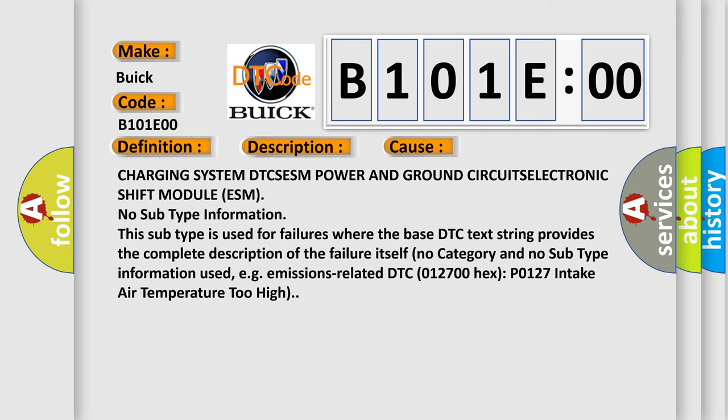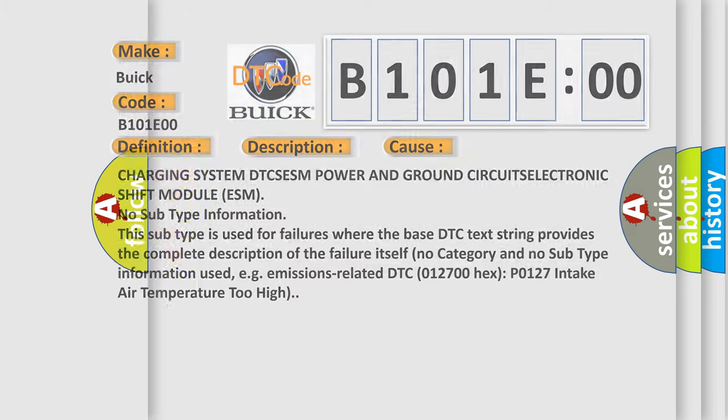This subtype is used for failures where the base DTC text string provides the complete description of the failure itself. No category and no subtype information used, e.g. emissions related DTC 012700 Hex P0127 intake air temperature too high. The airbag reset website aims to provide information in 52 languages.